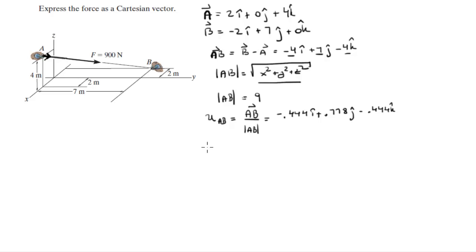Now that you have the univector and you have the magnitude of the force given to you by the problem, you can find the Cartesian vector form of the force by multiplying the magnitude by the univector. So multiplying these three values by 900 is going to give you the Cartesian vector form of the force which is negative 400i plus 700j minus 400k.